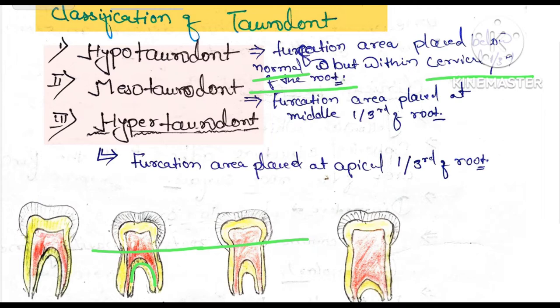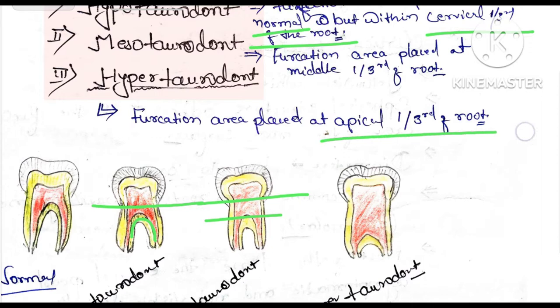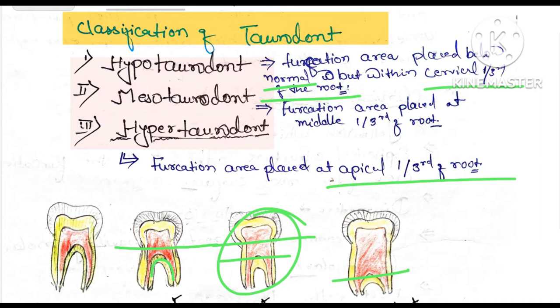The middle area: in mesotaurodont, the furcation is placed at the middle one-third of the root. In hypertaurodont, the furcation is placed at the apical one-third of the root. So: apical = hypertaurodont, middle = mesotaurodont, and just below normal within the cervical one-third = hypotaurodont.